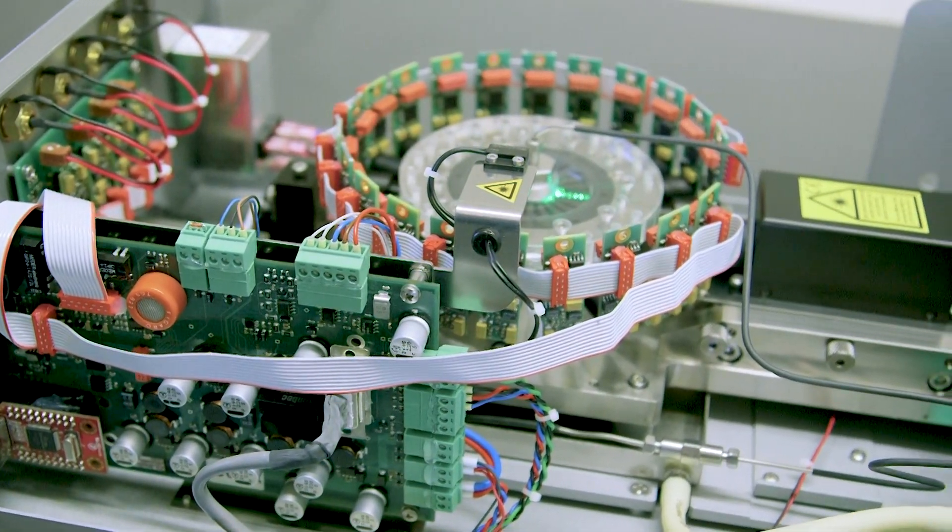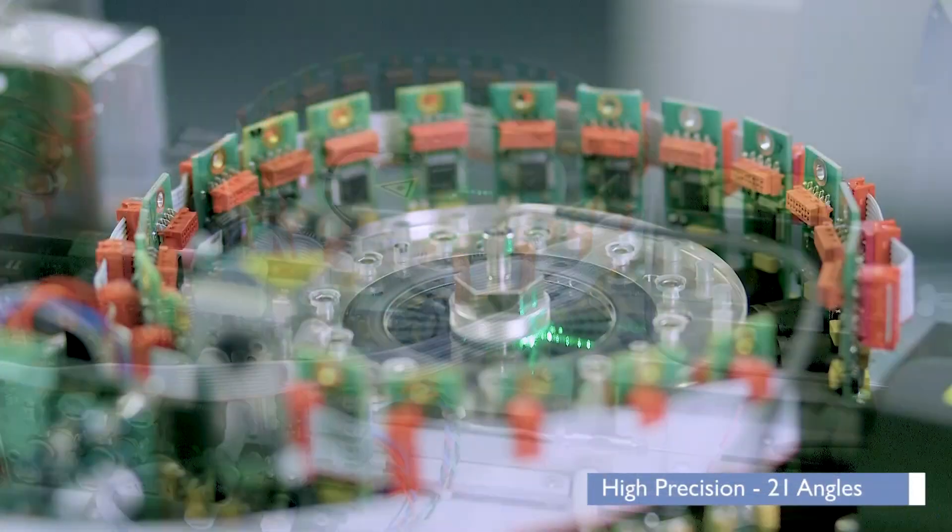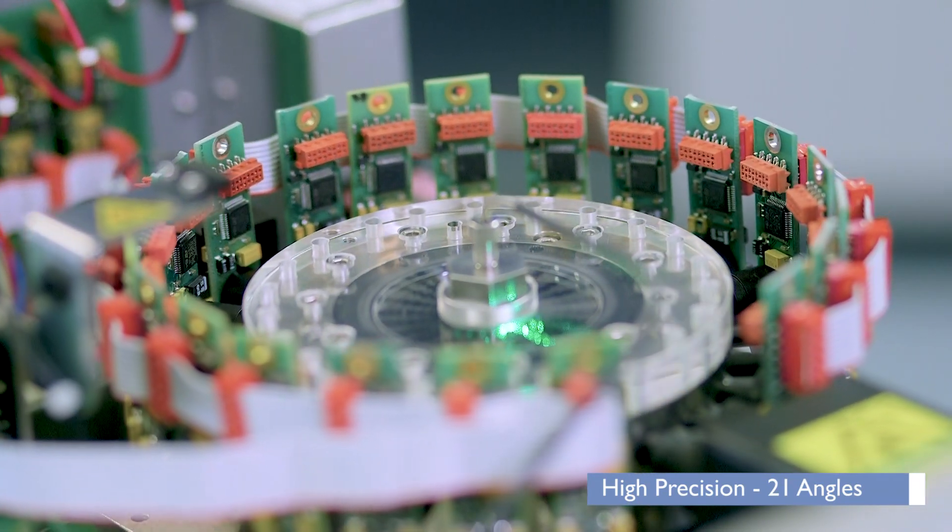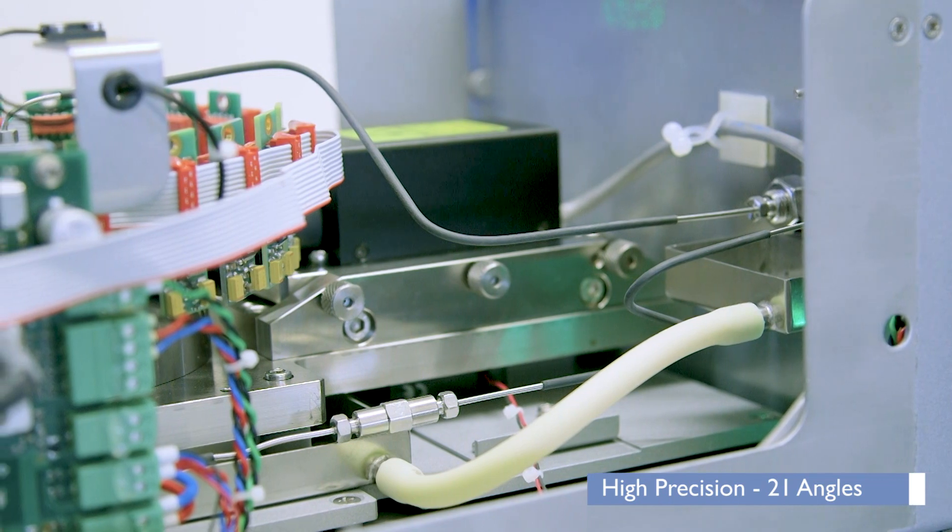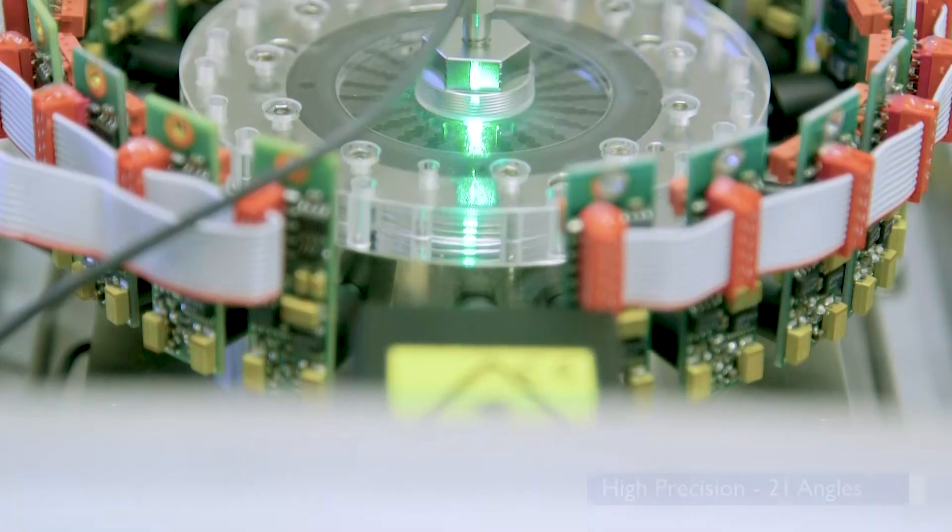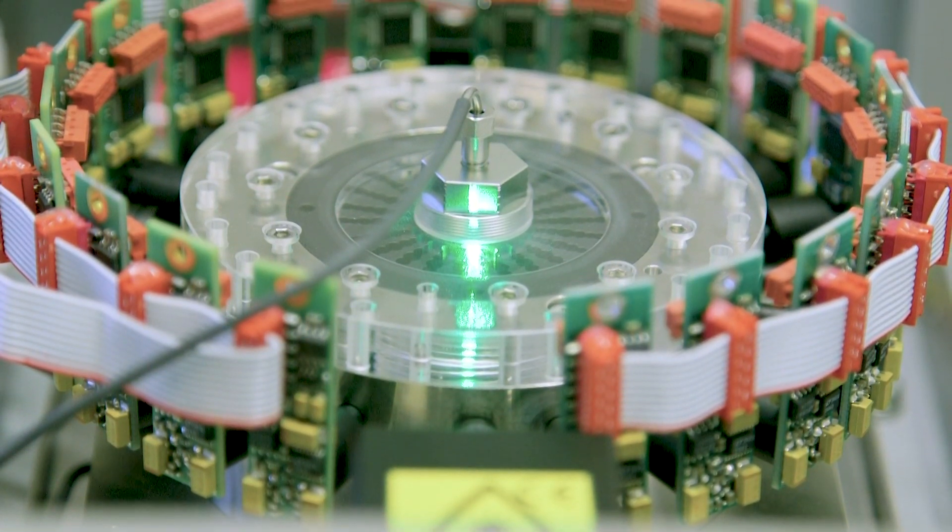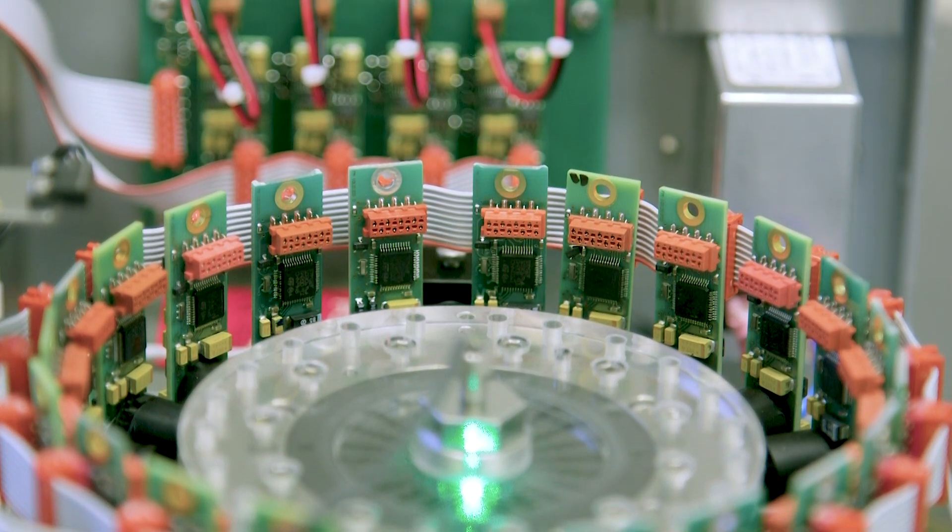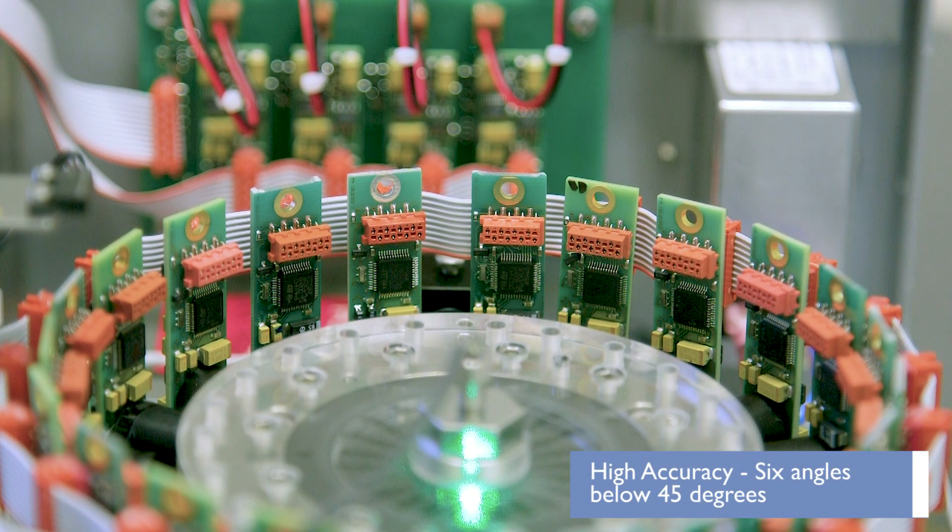Let's start with the heart of the system. There are 21 highly sensitive photodiode detectors arranged radially around the vertical light scattering flow cell. This gives the ultimate precision for your measurements. But crucially, for the highest accuracy, it is the lower angles that are important and the Postnova MALS has 6 angles below 45 degrees.